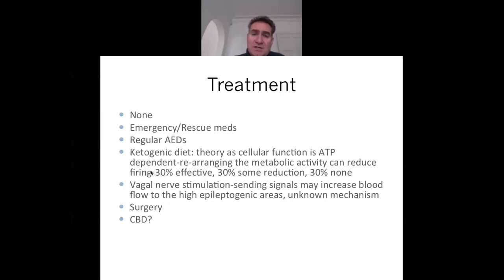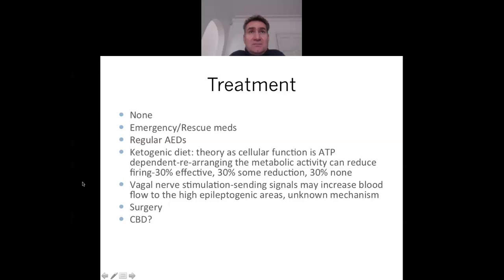Vagal nerve stimulation is another approach for managing refractory seizures or encephalopathies; it works by sending signals that may increase blood flow to highly epileptogenic areas, though the exact mechanism is somewhat unknown. Epilepsy surgery is considered especially in lesional seizures and early in life. There is also ongoing discussion about the use of cannabinoids, and new medications are being discovered continually.